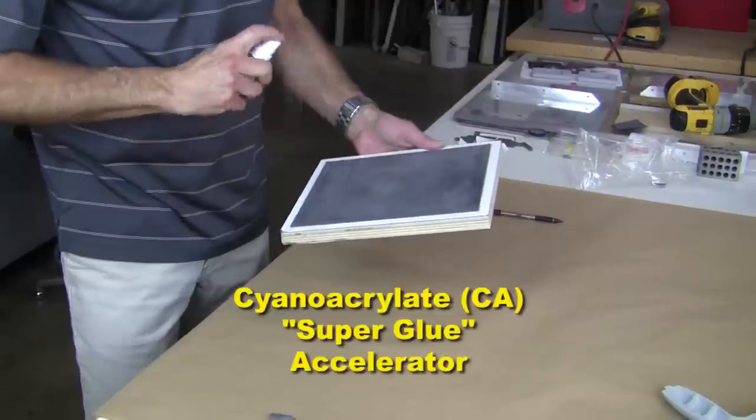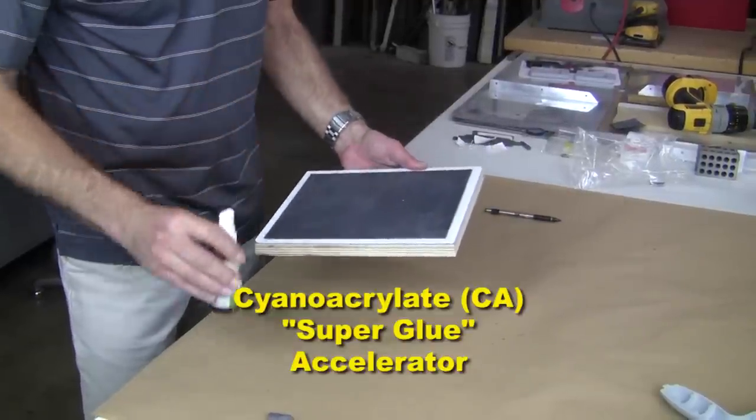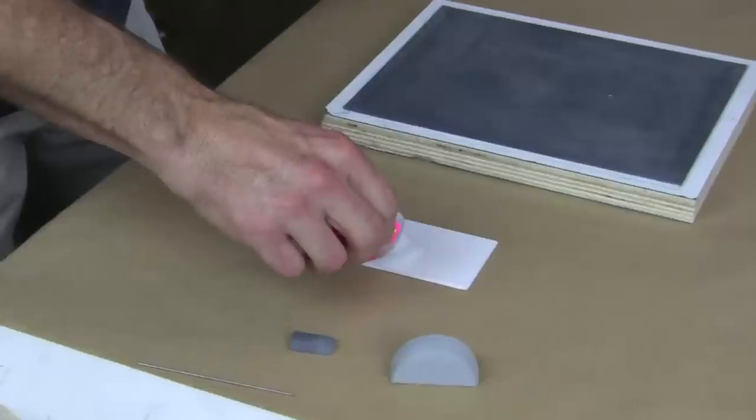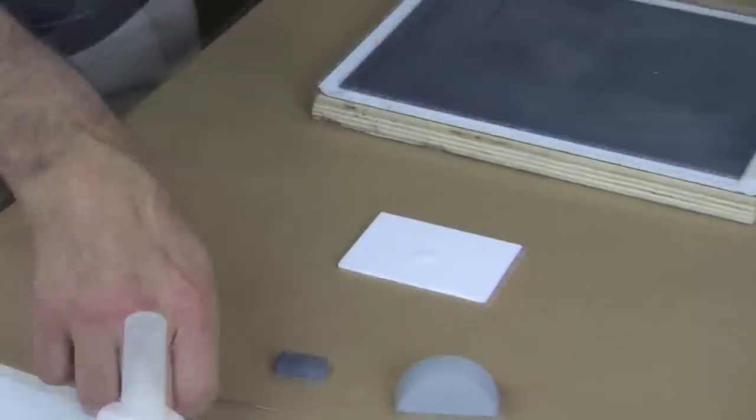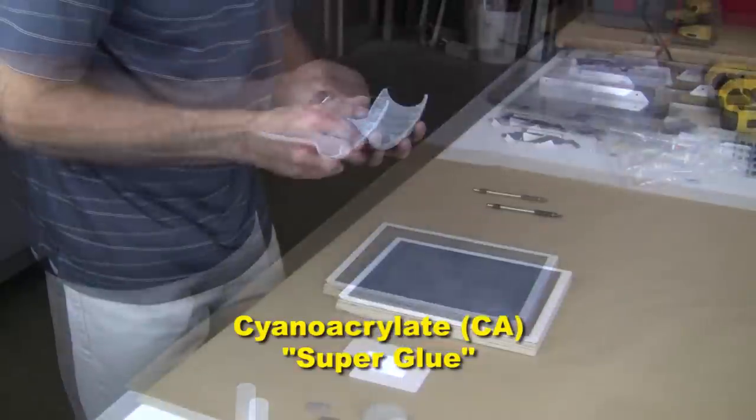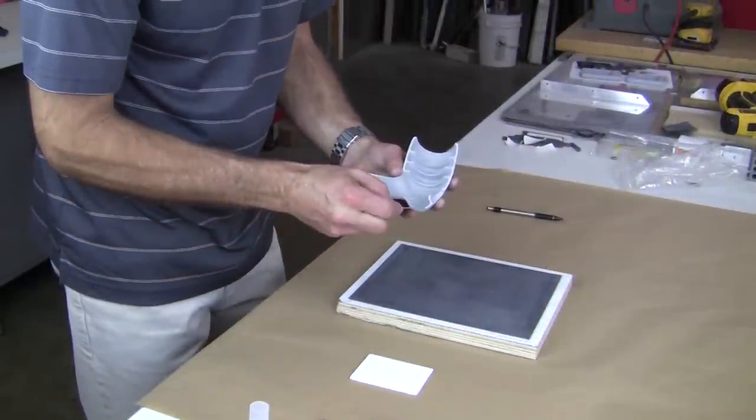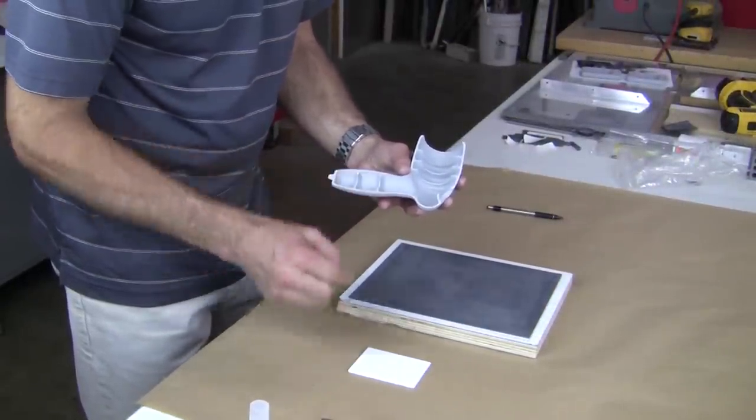A fine mist of cyanoacrylate accelerator is applied to the PVC. Using a piece of wire, we apply small dots of cyanoacrylate glue to the bottom of our pattern. We want just enough glue to hold the pattern down, but remain easy to remove later in the process.